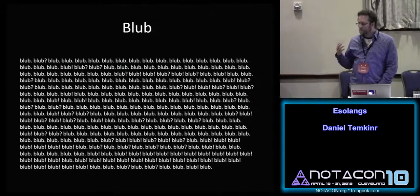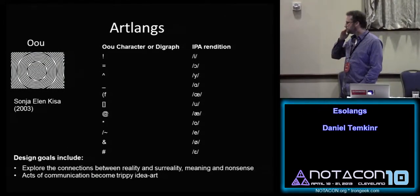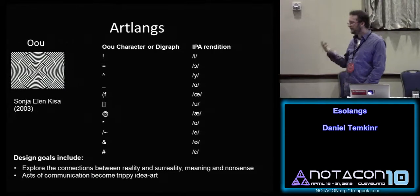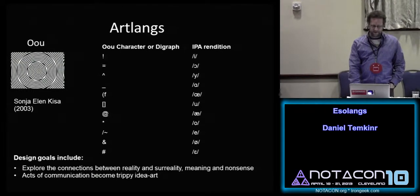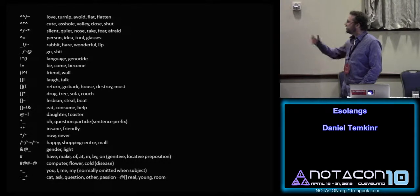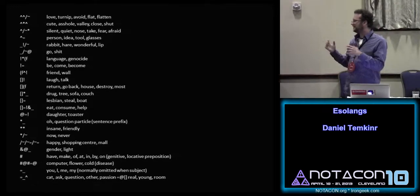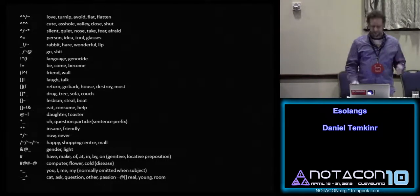Another thing BrainFuck makes me think of are art languages, especially the language Uwa. It's a spoken language, all written in punctuation like BrainFuck. There are no consonants — it's all strings of vowels — so it's already difficult to understand what somebody is saying. There's only a small vocabulary, and every word has many different meanings. If you want to say "I love you," it means the same thing as "you flatten the sofa." The word for language is the same as genocide. It becomes this trippy idea-art by just trying to have a conversation, and you can talk at length with someone before realizing you're discussing two completely different things.